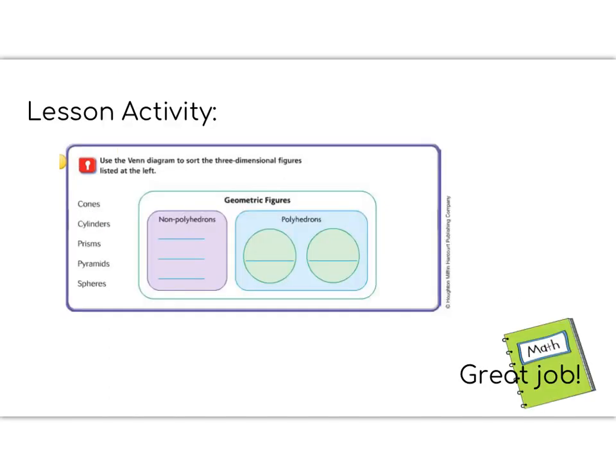All right, fifth graders, time for the lesson activity. In this lesson activity, we're going to do a bit of a Venn diagram. We're going to sort out these words and where they belong in the geometric figures. So first off, let's do the polyhedrons. We learned in this lesson that there are two types of polyhedrons: a prism and a pyramid. Then we learned that there are things called non-polyhedrons. And all non-polyhedrons involve a circle of some kind. Look back to the lesson we just did, or if you know it already, fill in the non-polyhedron names. Great job, fifth graders!